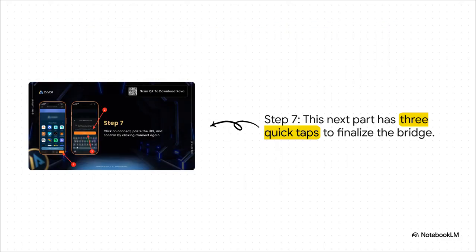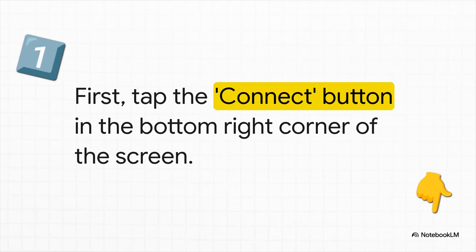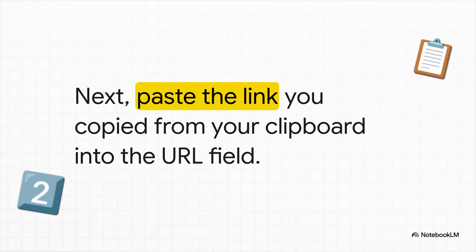Hang with me here. This next part might look a little complicated on the screen, but it's just three really quick taps. Let's break them down one by one so it's super clear. First up, see that orange connect button in the bottom right corner? Go ahead and tap that — that's one. A little window is going to pop up asking for a URL. All you've got to do is tap in that field and paste the link we just copied a moment ago — that's tap number two.